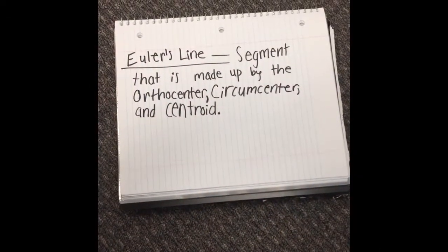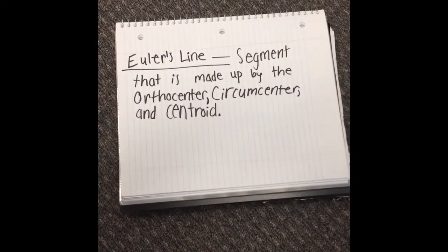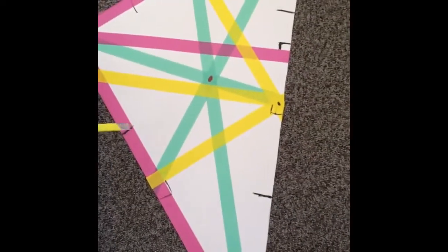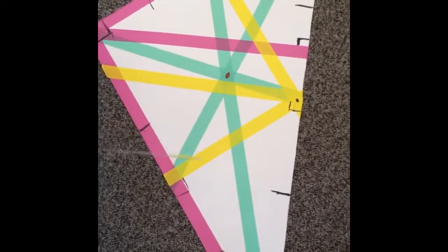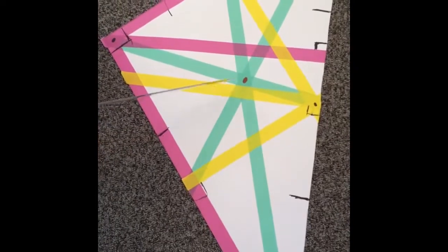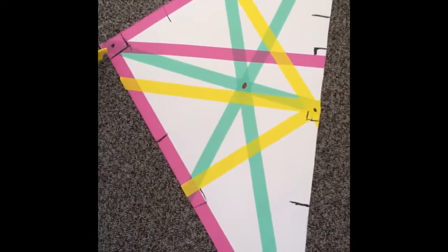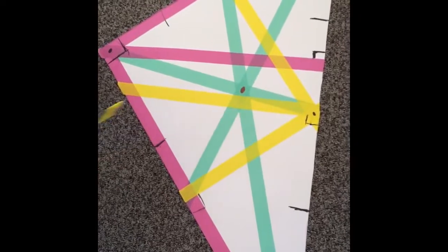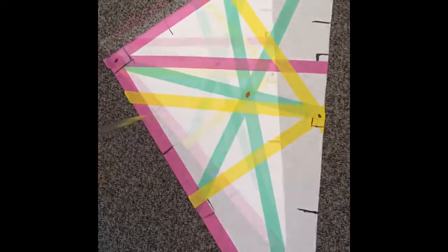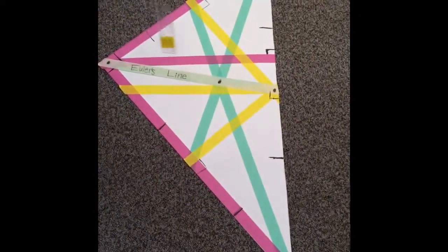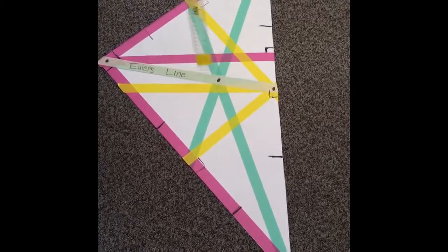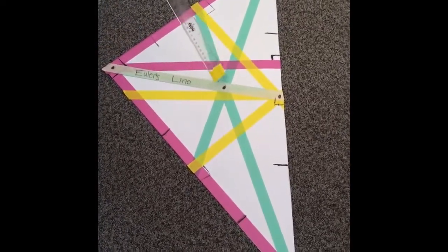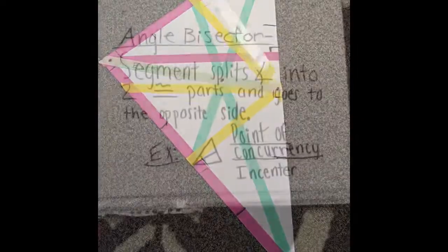Euler's line is a segment that is made up by the orthocenter, circumcenter, and centroid. If you haven't realized already, the circumcenter, the centroid, and the orthocenter are all collinear. This is known as Euler's line. This tan line represents Euler's line. It is created by the orthocenter, centroid, and circumcenter.